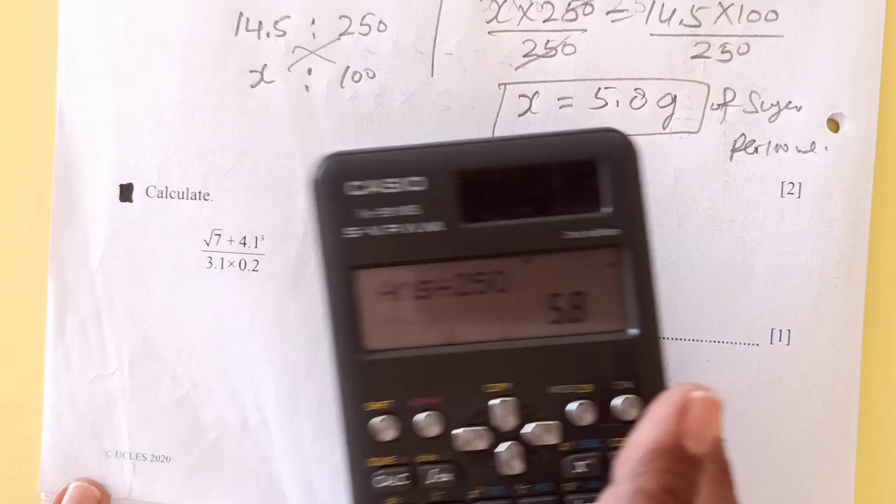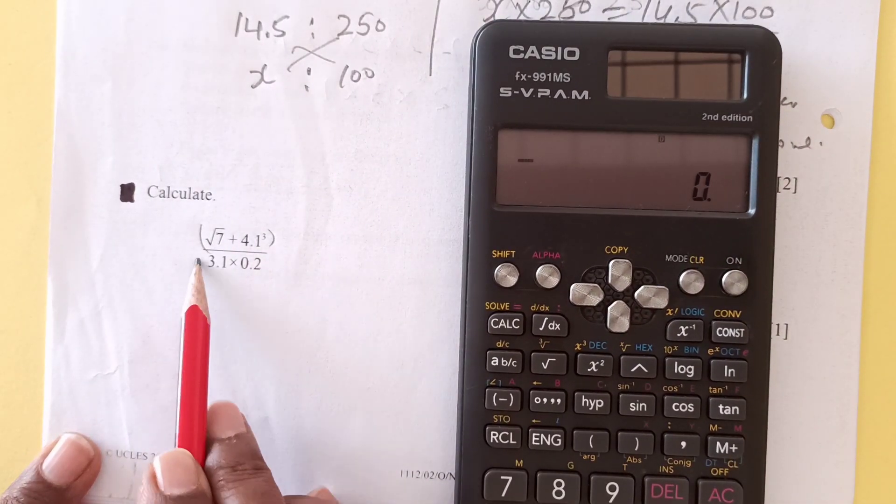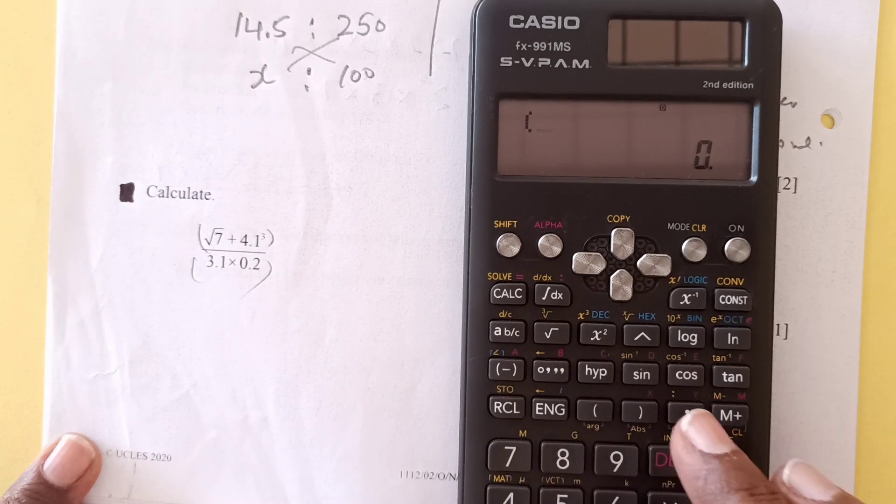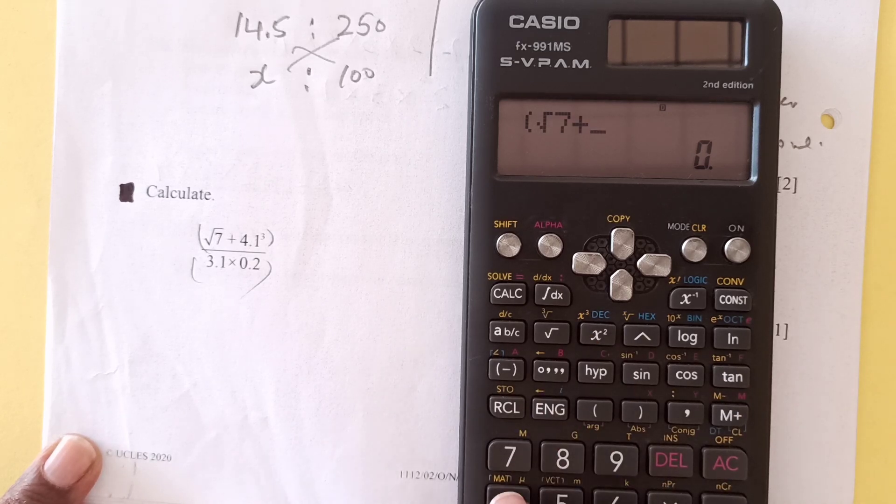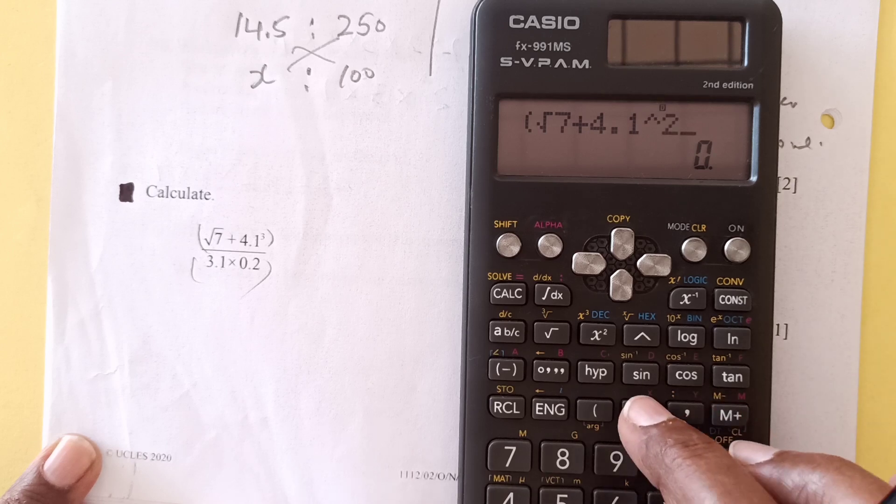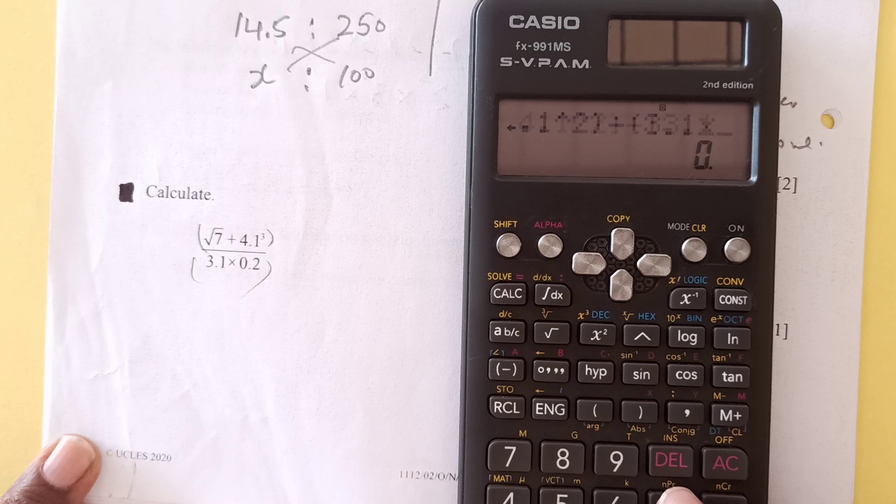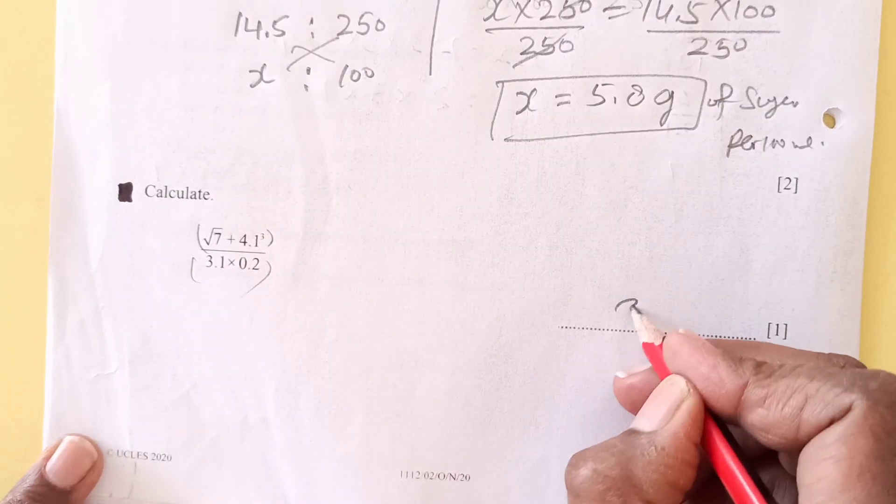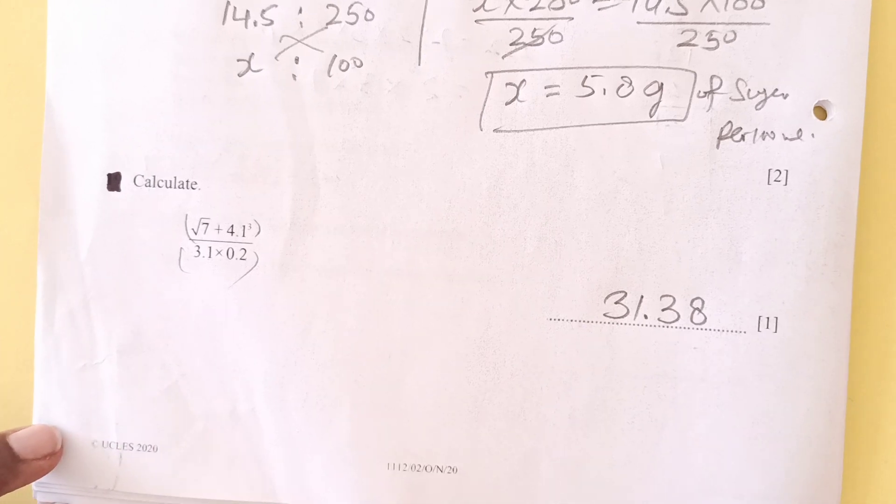Now next one is calculate. This is paper 2, actually you can directly use calculator, but make sure you put brackets wherever necessary. So there should be bracket here divided by bracket here. So I will write it down here: bracket, square root of 7 plus 4.1 power 2, bracket close, divided by bracket 3.1 times 0.2, like this. So this is 31.38.